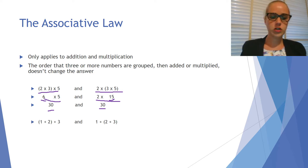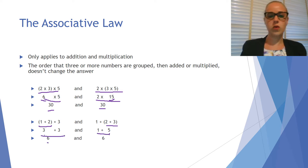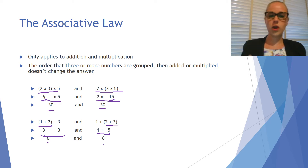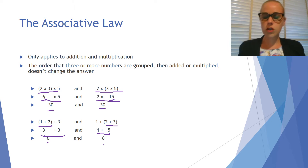We see the same thing for addition. So 1 plus 2 plus 3: if I do 1 plus 2 first, I'll get 3. If I do the 2 plus 3 first, I'll get 5. So then 3 plus 3 gives me 6, and 1 plus 5 also gives me 6. The associative law says that the order that 3 or more numbers are grouped and then added or multiplied doesn't change the answer, so you can group them in the order that makes it easiest for you.